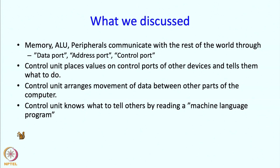So we have discussed that a computer has several parts: memory, ALU or arithmetic unit, and peripherals, which communicate with the rest of the world through data port, address port, and control port. There is a control unit which tells other devices what to do by placing values on their control ports, and arranges for data movement between parts of the computer. The control unit knows what to tell others by reading a machine language program stored in the memory of the computer.